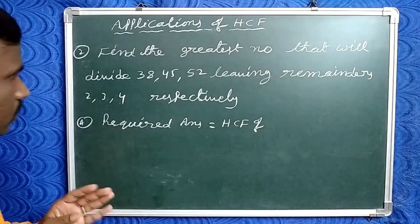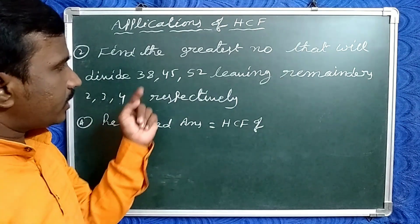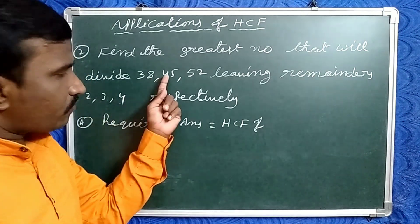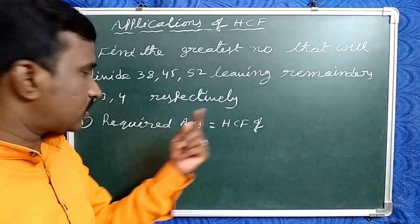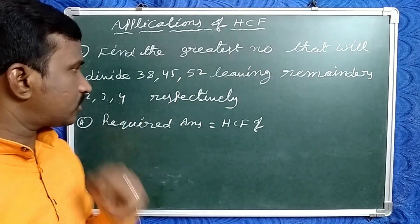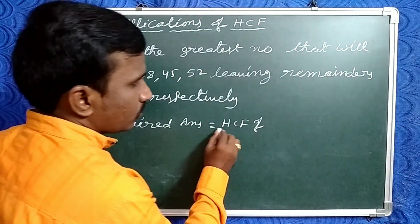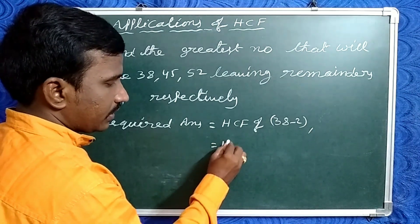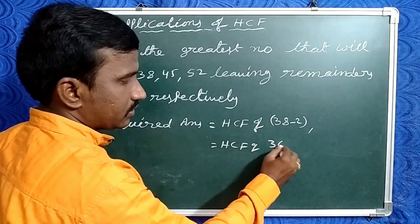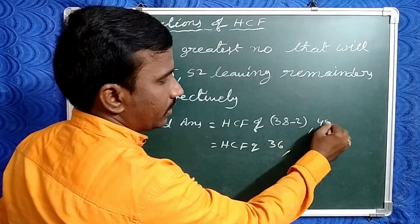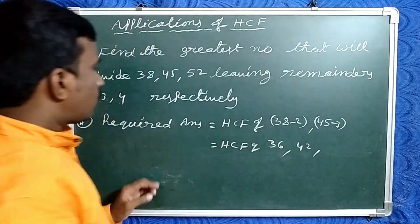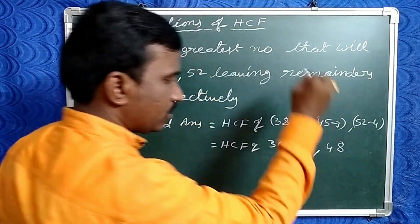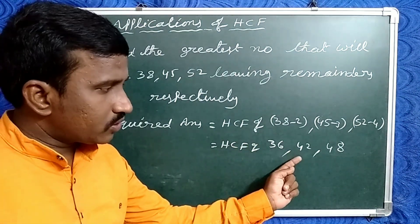Friends, now check the example of the second model. Find the greatest number that will divide 38, 45, 52 leaving remainders 2, 3, 4 respectively. So in this case, first of all find the differences: 38 minus 2 equals 36, 45 minus 3 equals 42, 52 minus 4 equals 48. Now find the HCF of 36, 42, and 48.